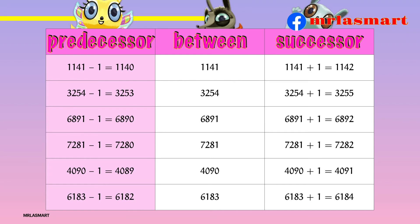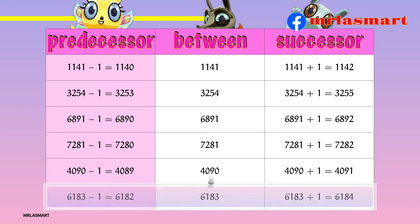Now take a look at 6,183. After subtracting one from it, we get 6,182 as its predecessor. And after adding one to it, we get 6,184 as its successor.